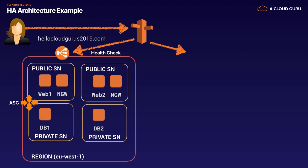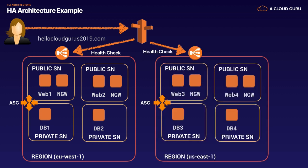We then have another region with an identical environment set up - this might be in US East 1 - also backed by a health check. That way, if one of the regions goes down, or perhaps just an availability zone, you've got failover. You can failover from one region to another, or from one availability zone to another. This is a good example of highly available architecture.